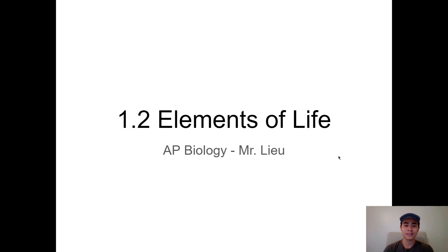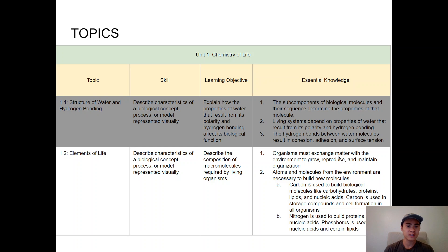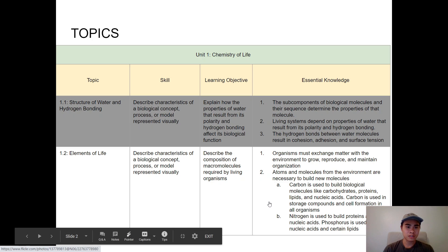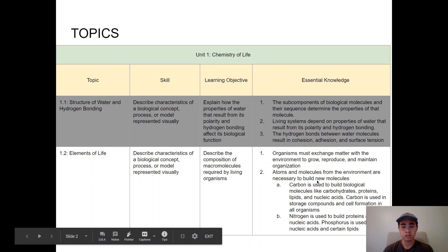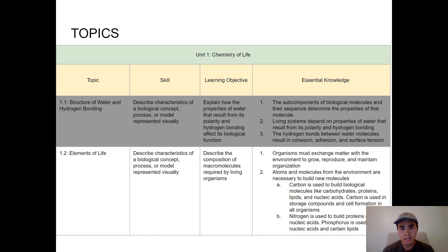In this video we're going to go through 1.2 Elements of Life and dive into the framework. There are two main components, each with sub-components — essentially four points to know. The first is that organisms must exchange matter with the environment to grow, reproduce, and maintain organization. The second is that atoms and molecules from the environment are necessary to build molecules. The biggest ones we'll discuss are carbon and nitrogen, as nitrogen is used to build proteins and nucleic acids.